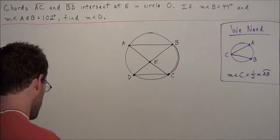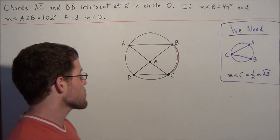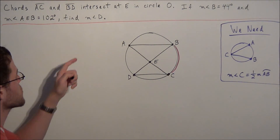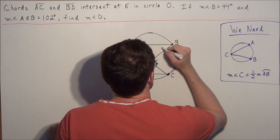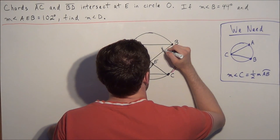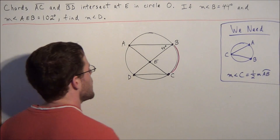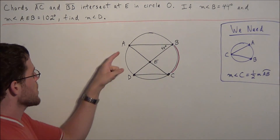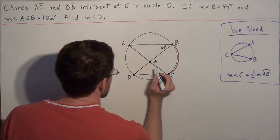What we want to do first is fill in all the information given to us. We know that the measure of angle B is 44 degrees, so we label that angle 44 degrees. We also know that the measure of angle AEB is 102 degrees.